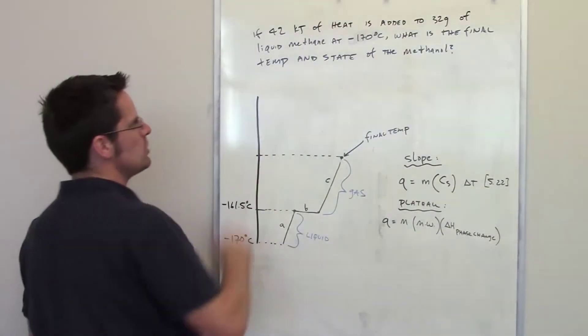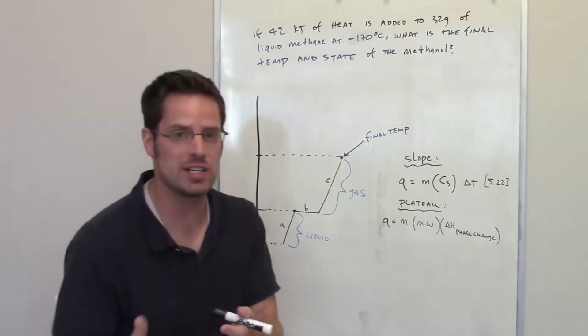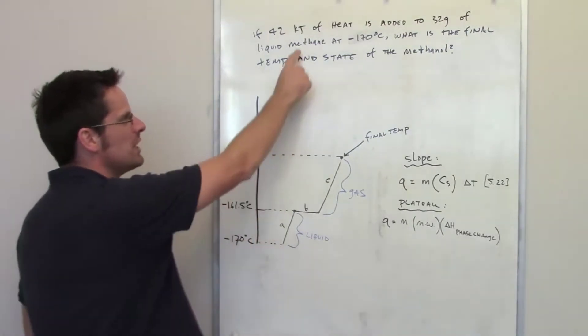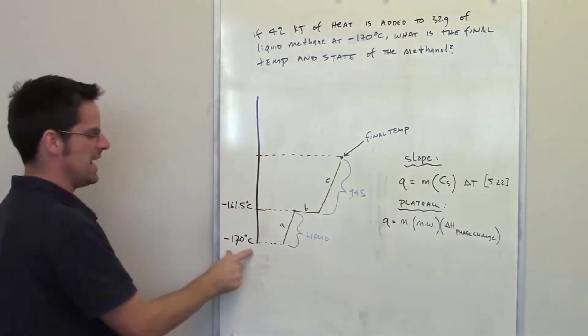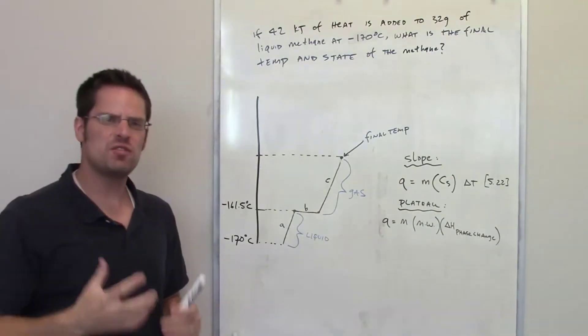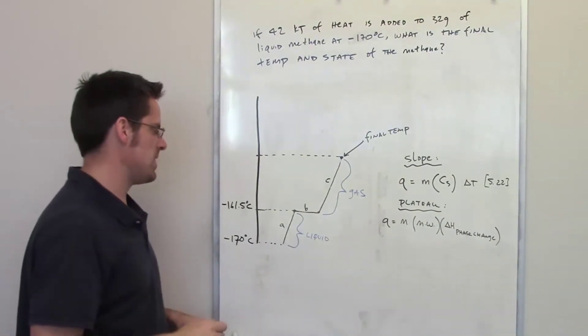The question says, if 42 kilojoules of heat is added to a 32 gram sample of liquid methane starting at negative 170 degrees Celsius, what's the final temperature and state of the methane when you're all done?